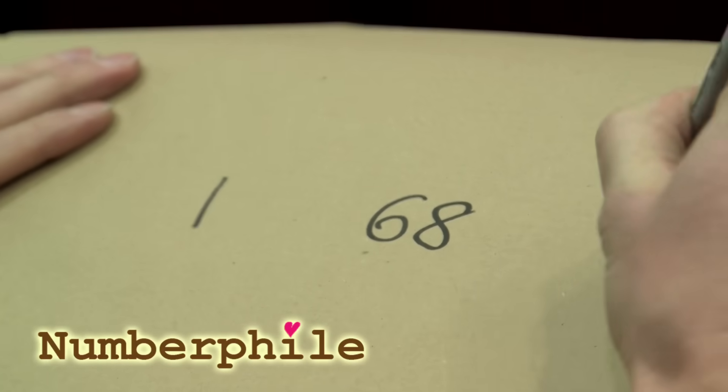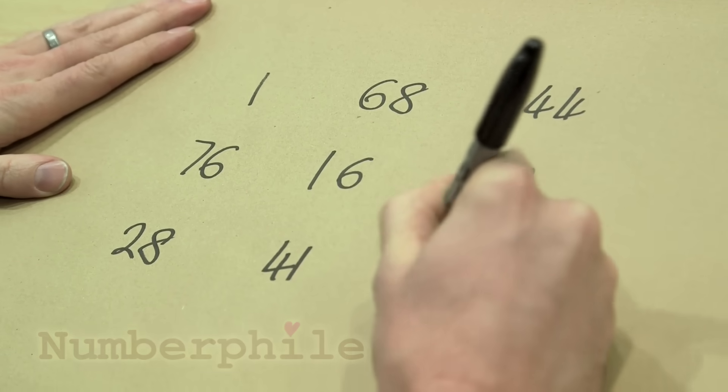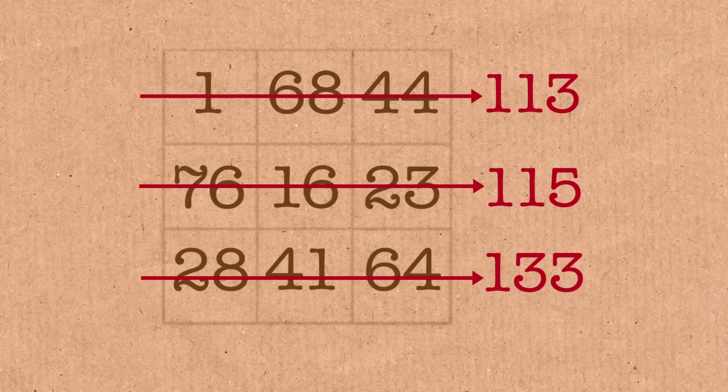68, 44, 28, 41 and 64. So you go, okay, that's quite a nice magic square, except it doesn't work. If you add them up you get different numbers in different directions.